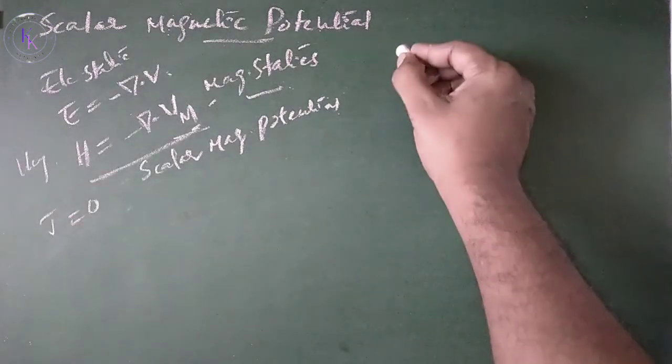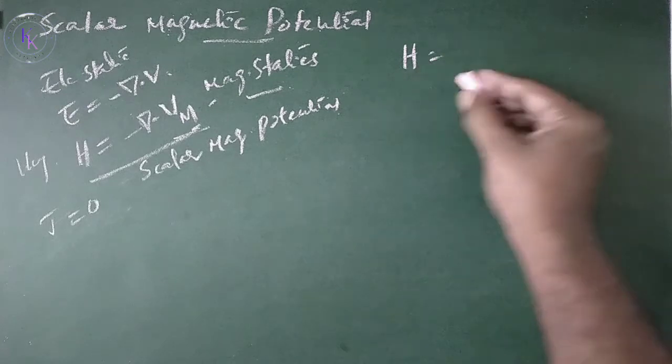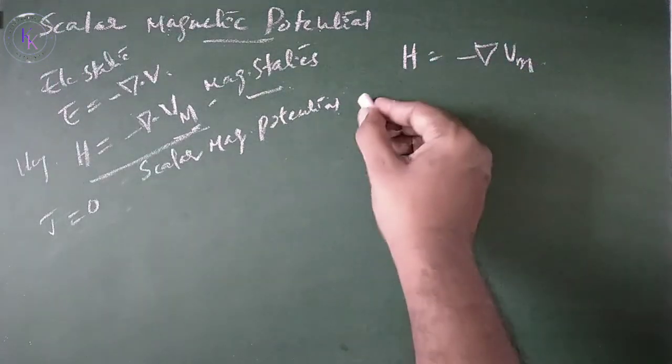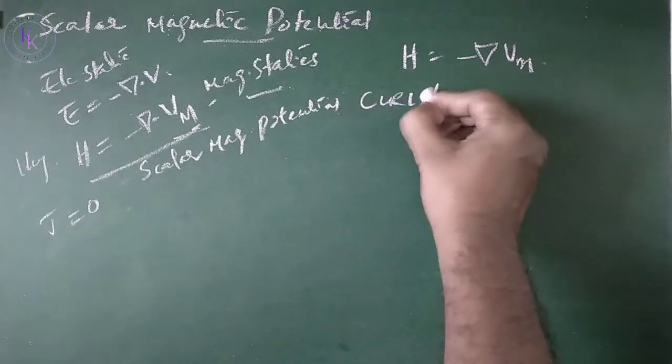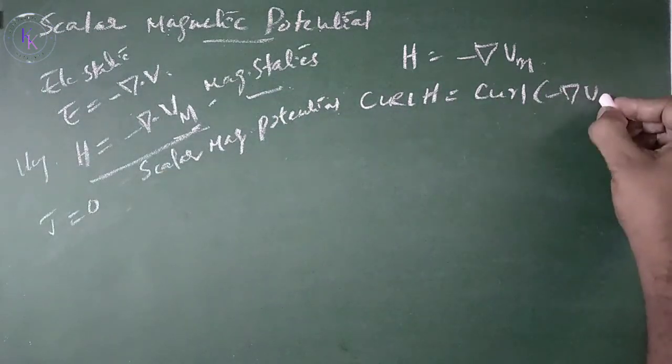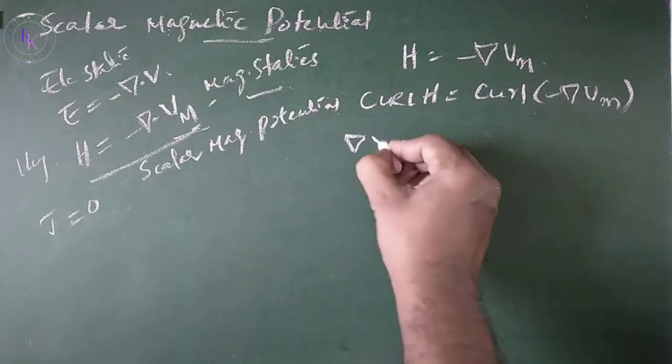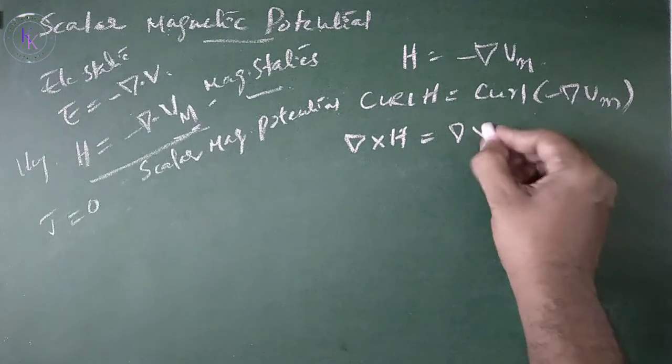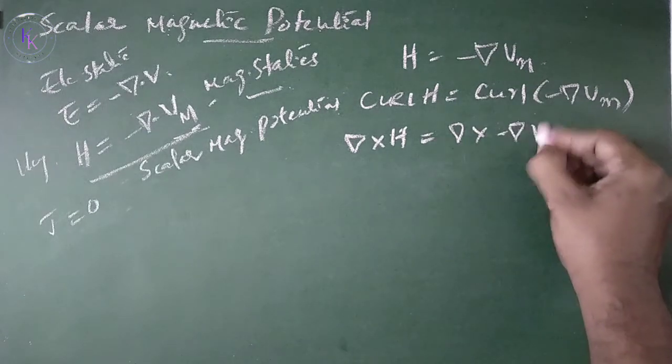Consider H equals minus del Vm. Curl H equals curl of minus del Vm. Del cross H equals del cross minus del Vm.